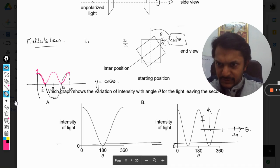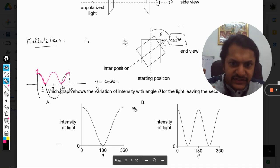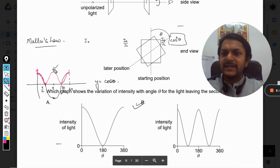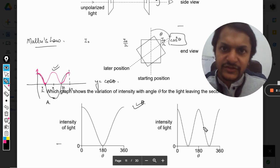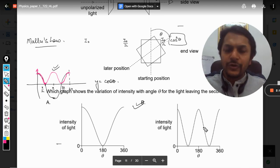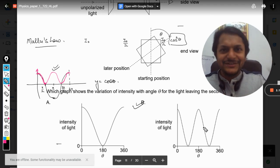As we can see, this B option is definitely same as that of our pink graph, so B will be the correct answer for this question. This is how you do it, and this is Professor Varun. Please subscribe to the YouTube channel and press the bell icon. All the best, bye.